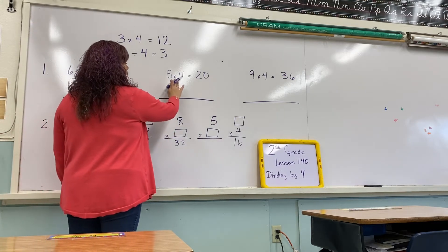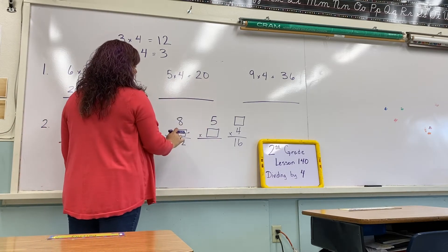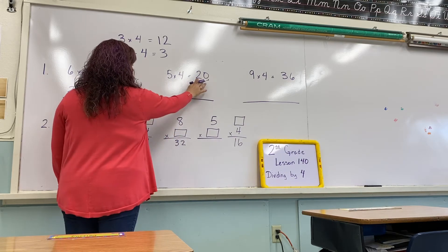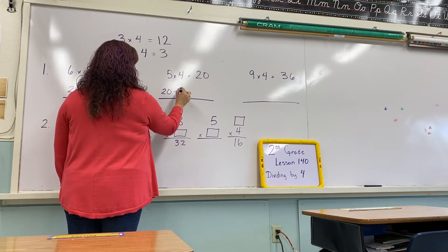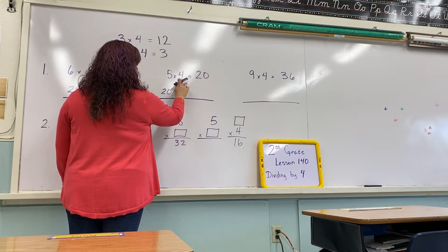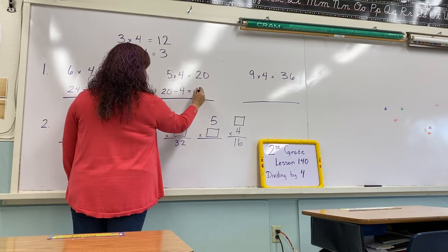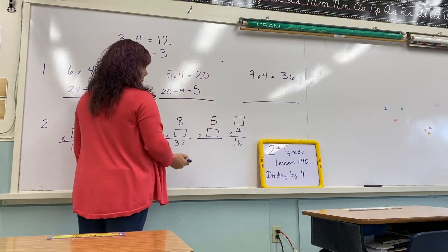Your next one is 5 times 4 equals 20. To make that a division problem, you start with the answer, 20. You're going to divide them into 4 groups. How many are you going to have in each group? 5.